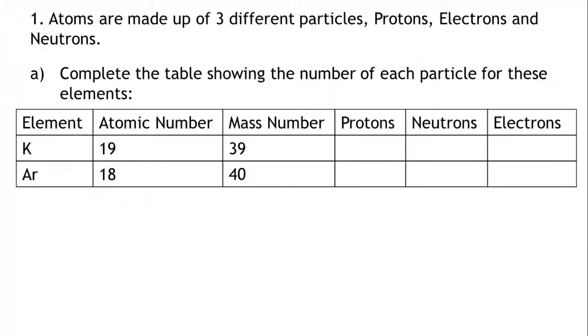Question 1. Atoms are made up of three different particles: protons, electrons, and neutrons. Part A: Complete the table showing the number of each particle for these elements.